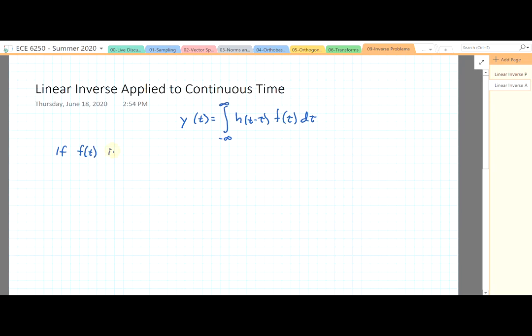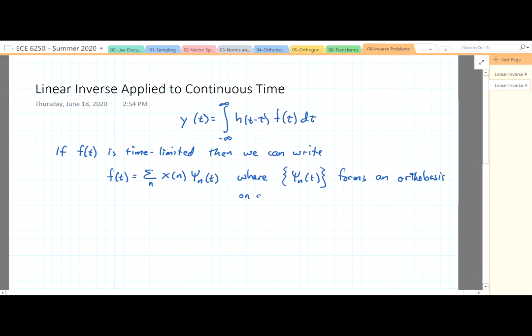So if f(t) is time-limited, and we can write the following, f(t) is equal to sum over n, x(n)ψ_n(t), where this isn't necessarily the wavelet basis, it's just an orthobasis on a finite interval.